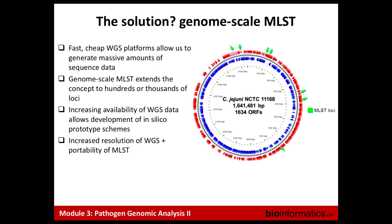The obvious solution is to scale the MLST concept up to the entire genome, because we now have whole genome sequencing that's fast and relatively cheap. You can take this seven-gene MLST concept and scale it up to hundreds or thousands of genes. As people all over the world are sequencing more and submitting data to online repositories, we have ever greater diversity to look at in which to design a scheme.